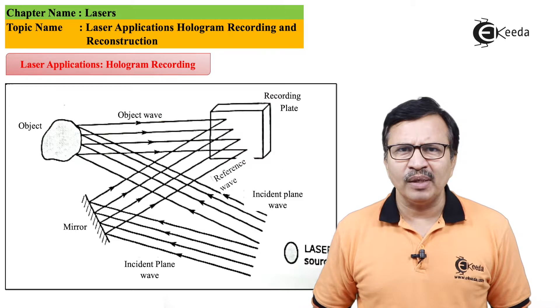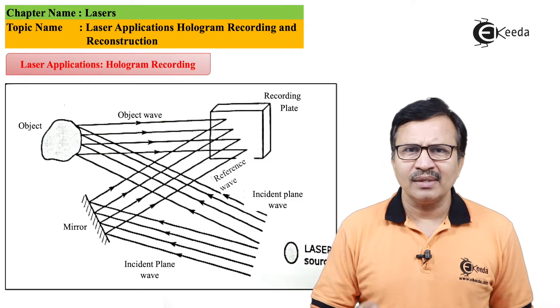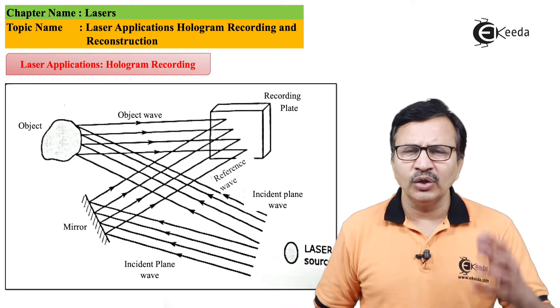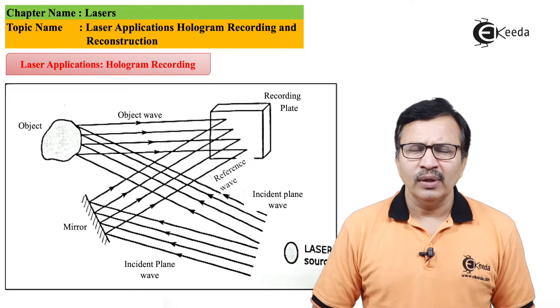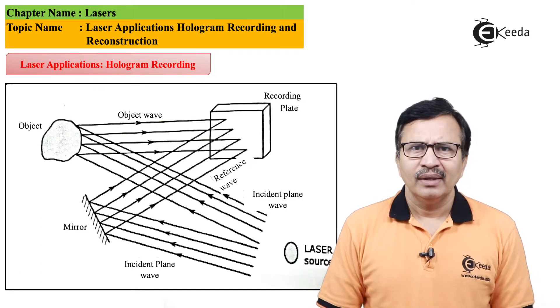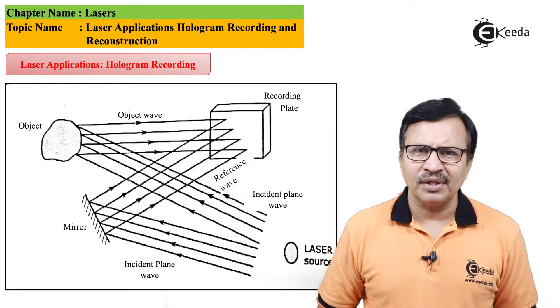So the reference beam is made to fall on a mirror whereas the object beam is made to fall on the object.